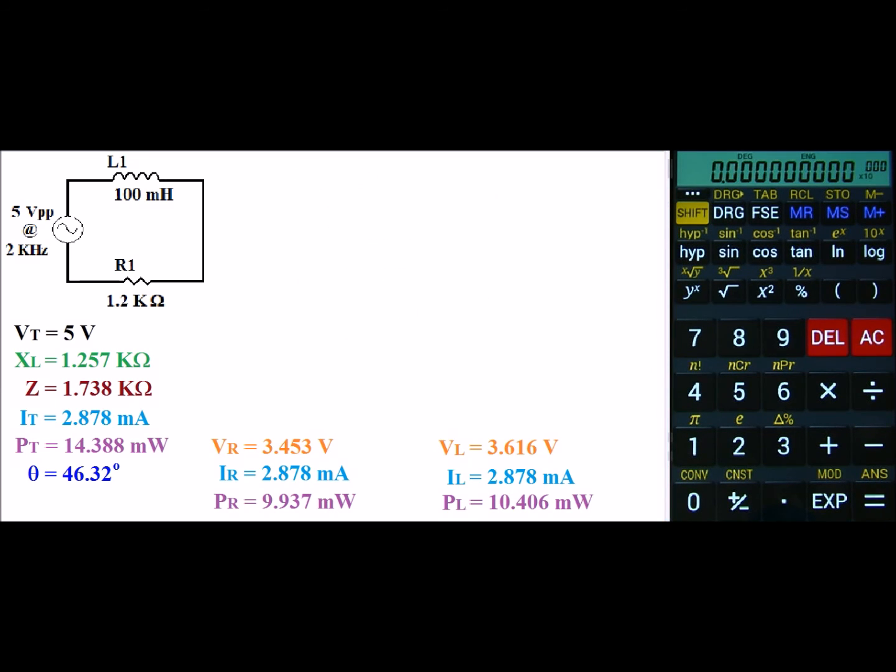Now that we're all done with the circuit, we can go ahead and use Kirchhoff's voltage law to double check our values. Now, again, in a series resistor circuit, Kirchhoff's voltage law was just the sum of all the voltage drops across all the resistors. But in this case, remember that there's a phase difference between the resistor and the inductor. So Kirchhoff's voltage law changes to the square root of Vr squared plus Vl squared.